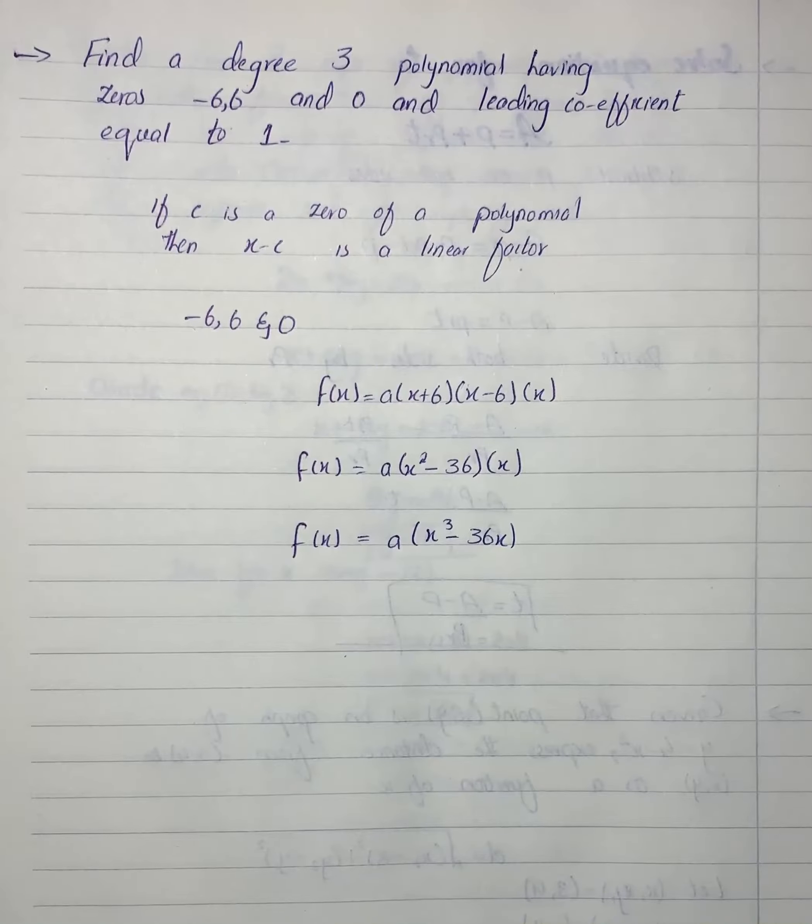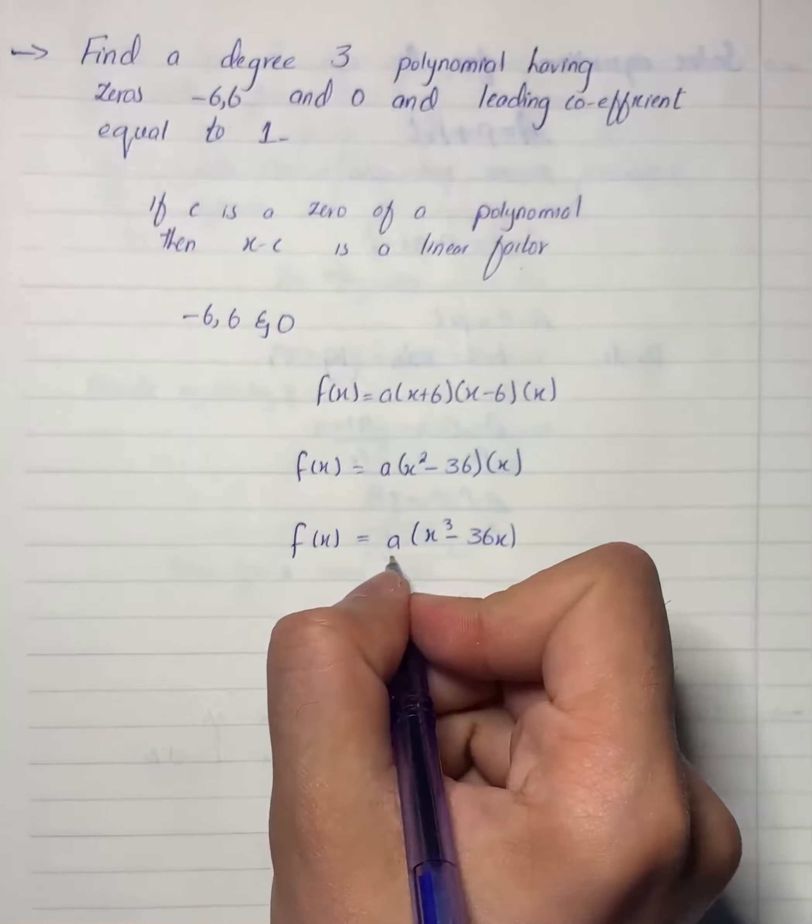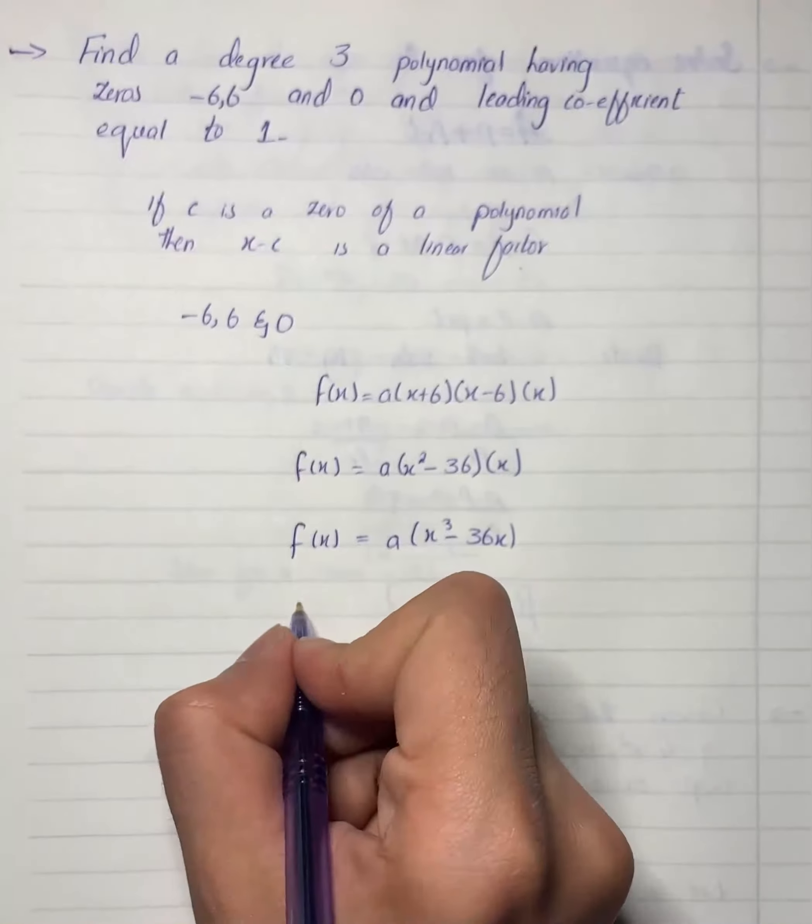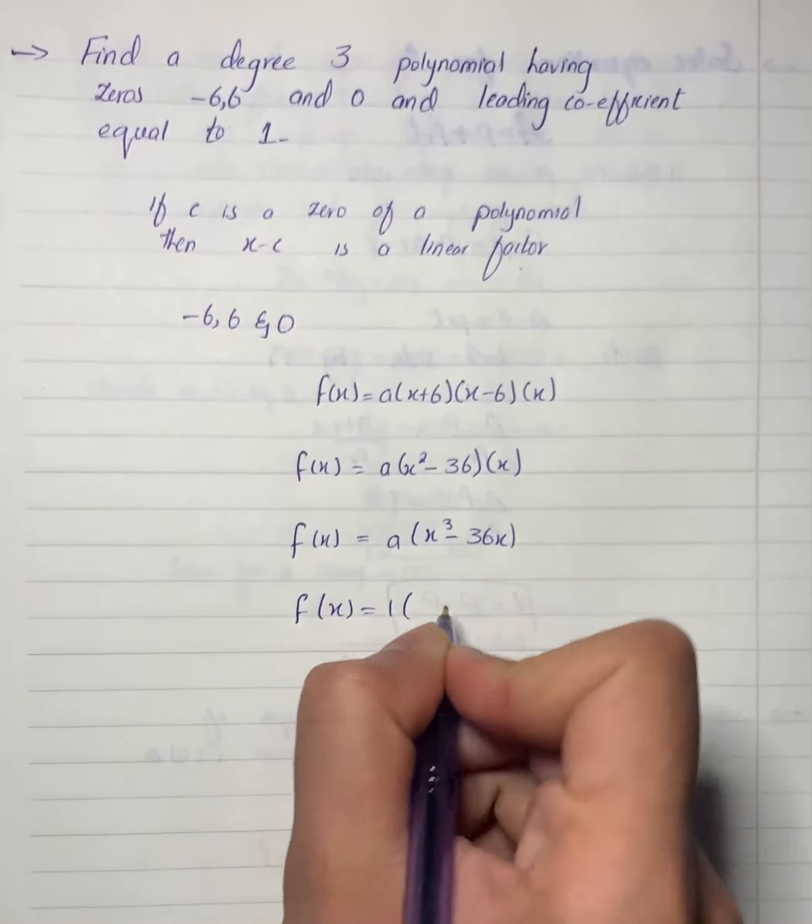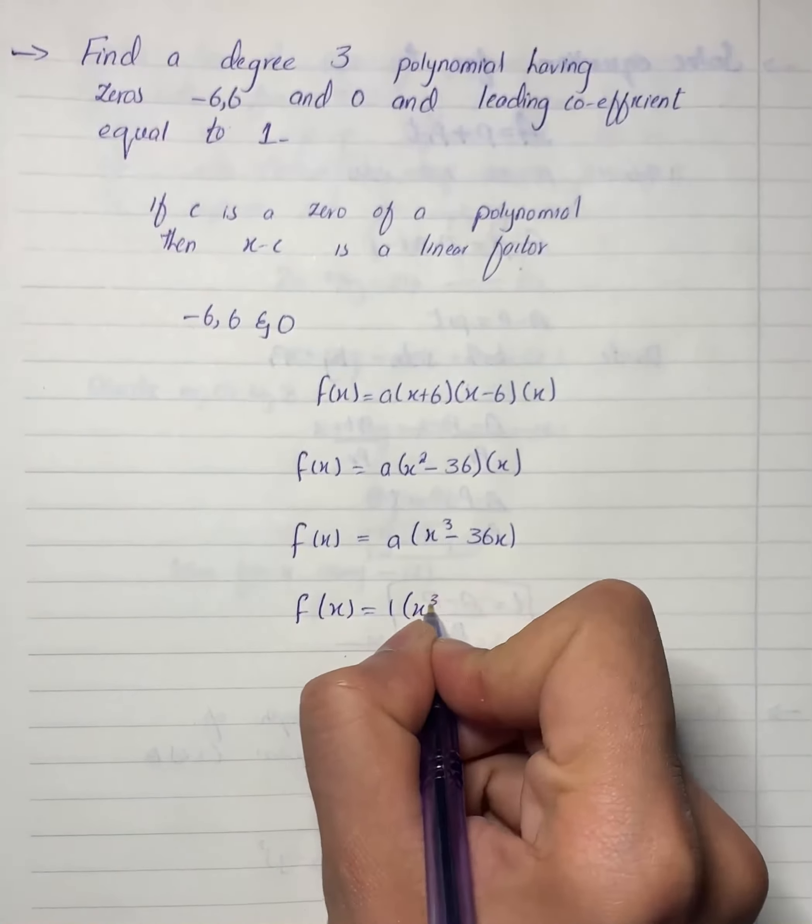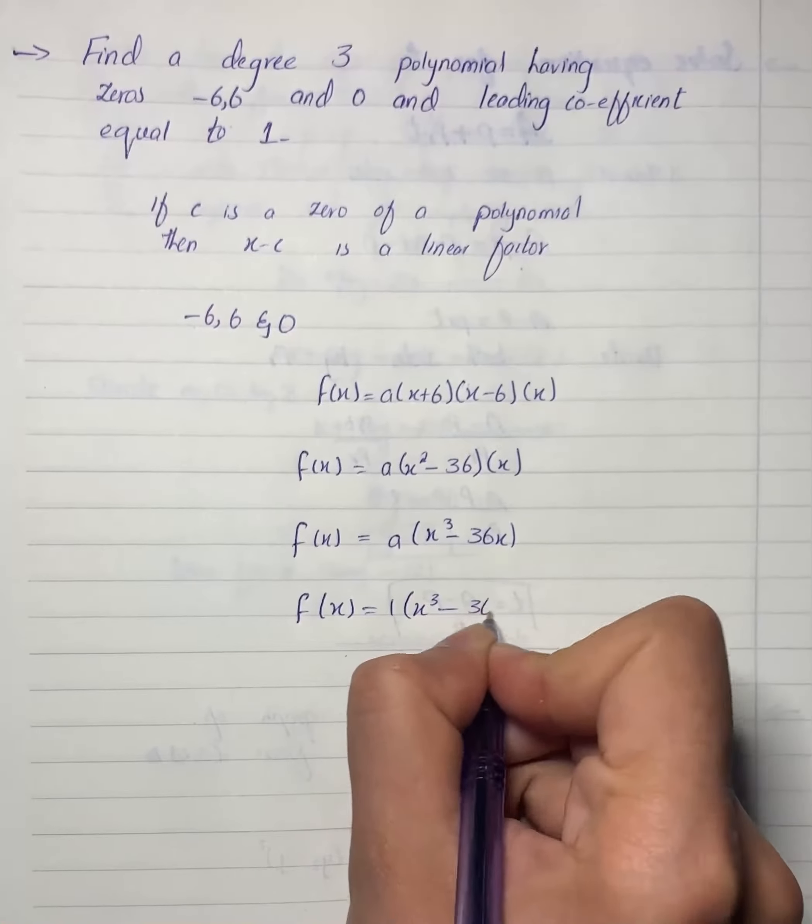we simply let a equal to 1. So this a will become 1, giving us f(x) = x³ - 36x.